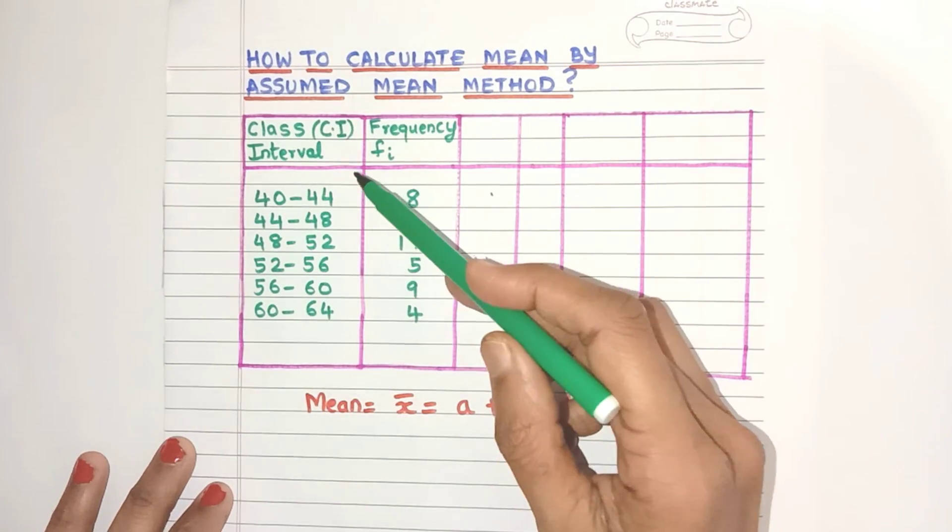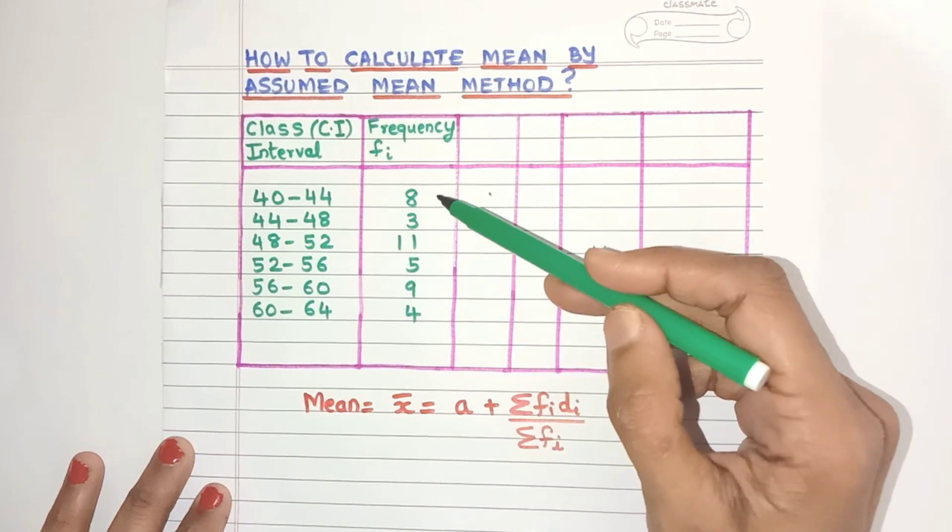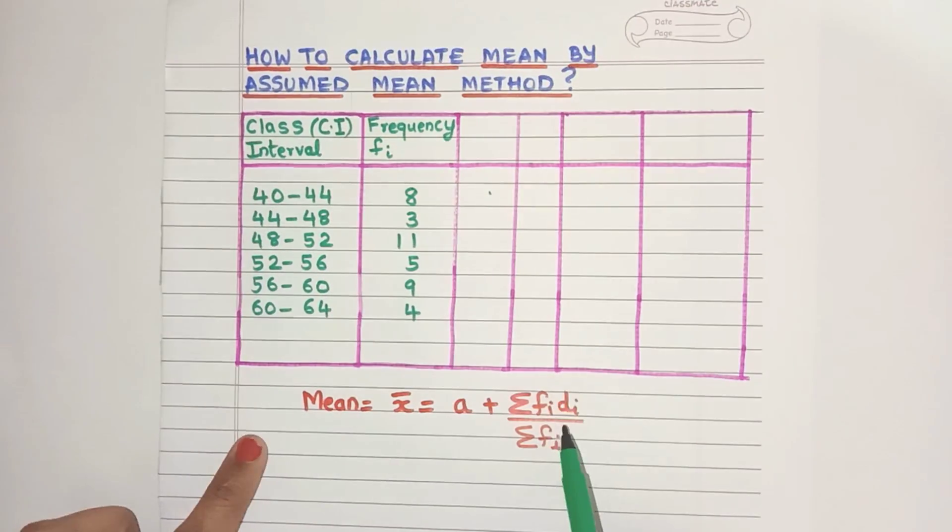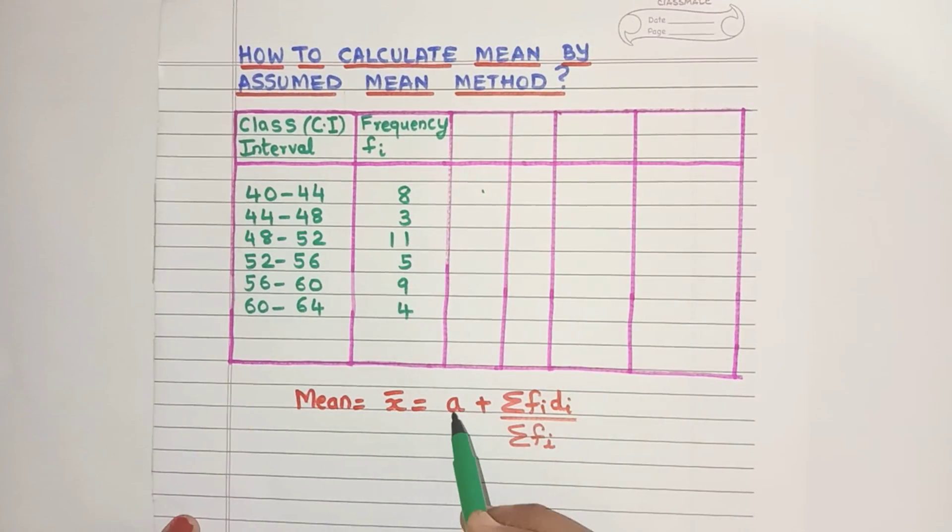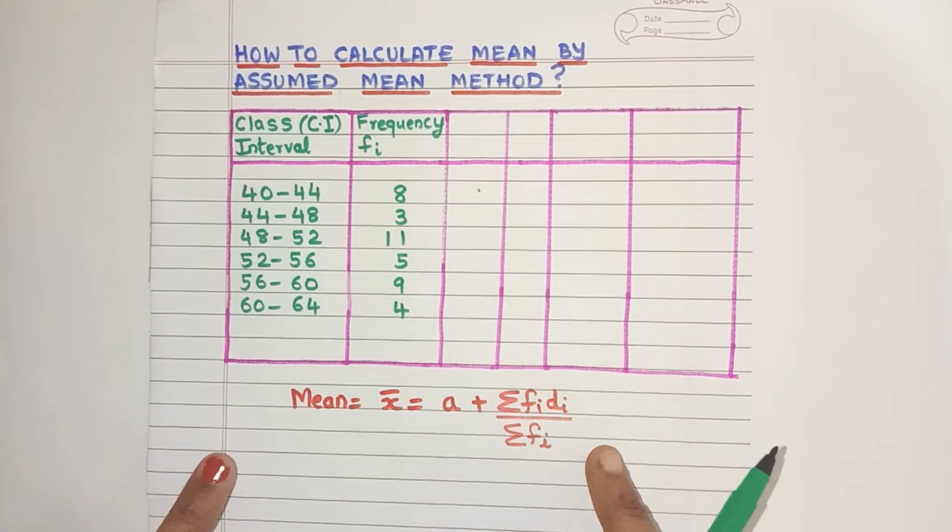So in this example, here is the class interval column and this is my frequency column. Now the formula to calculate by the assumed mean method is this. So first let's find out all these values and then use this formula.